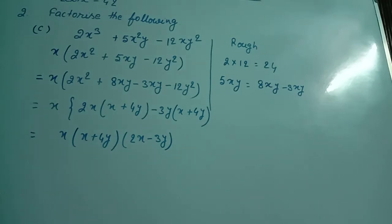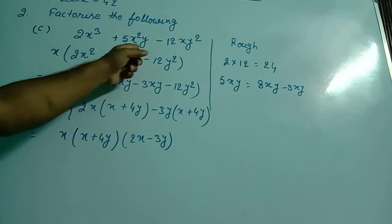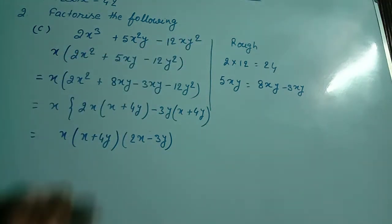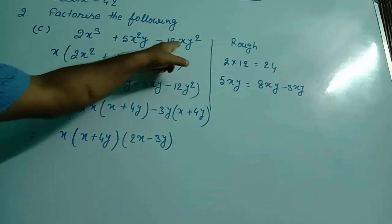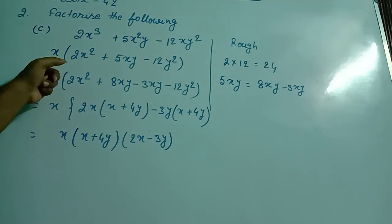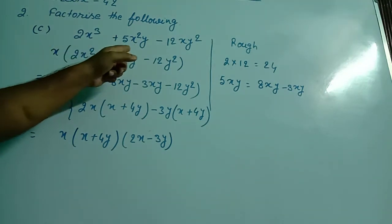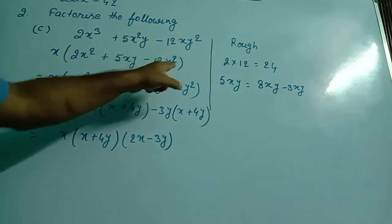In question number 2c, the equation is 2x³ + 5x²y - 12xy². First of all, what are we seeing? X is possible to be taken as common. I took X as common, and the remaining portion of the equation I wrote inside the bracket.